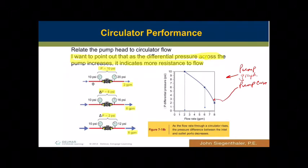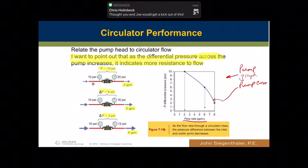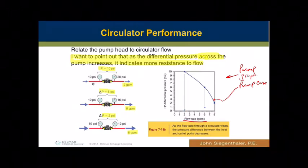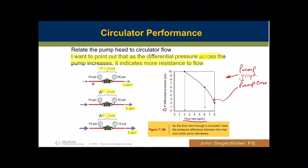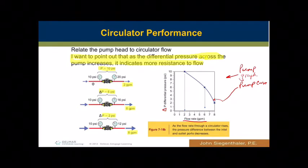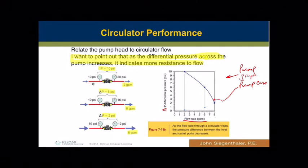On this particular curve, we're identifying flow rate on the very bottom — just showing zero GPM up to eight gallons a minute. On the left side, this is going to be a delta P — your differential pressure — which is what we're adding in energy or pressure, what the pump is doing. That's a really important characteristic to understand.